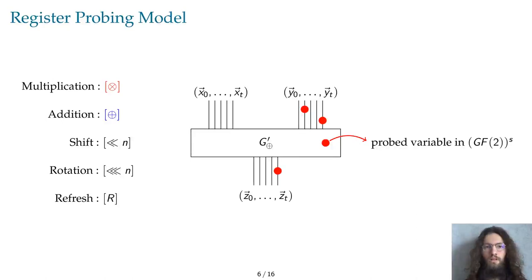While this model is relevant in a hardware scenario, it is not enough when we consider masked software implementations, where variables are manipulated in registers in which all the bits leak together. We thus define the register-probing model where the attacker has access to the description of such a masked software implementation in the form of a circuit composed of gadgets, processing shares which are now vectors.